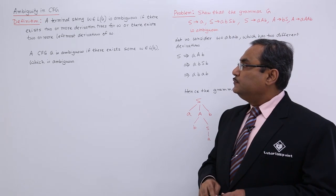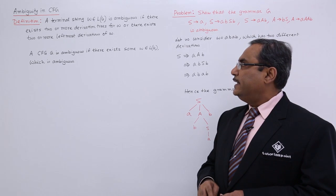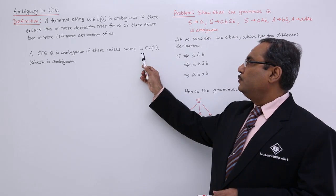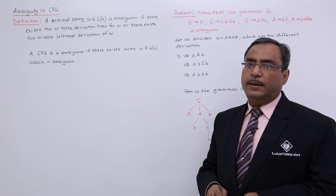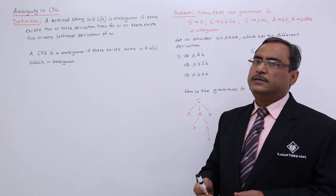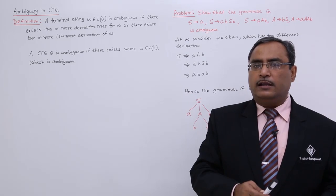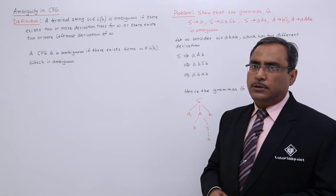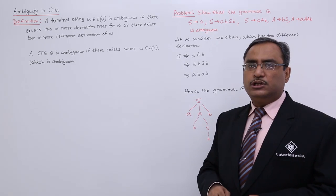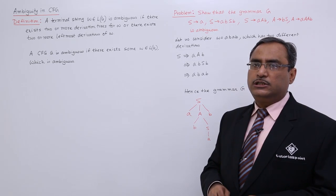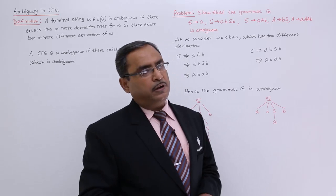A CFG G is ambiguous if there exists some w belongs to L(G) which is ambiguous. So if we find such w which is ambiguous, then the grammar itself will become ambiguous. To have a better understanding on this particular ambiguity in context-free grammar, let us discuss this particular problem.